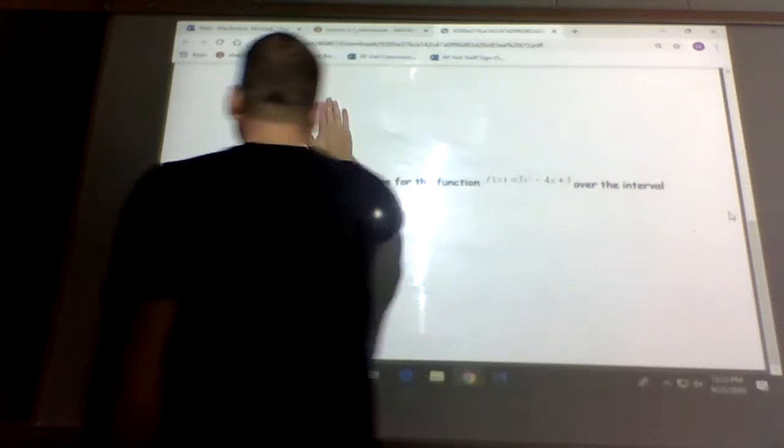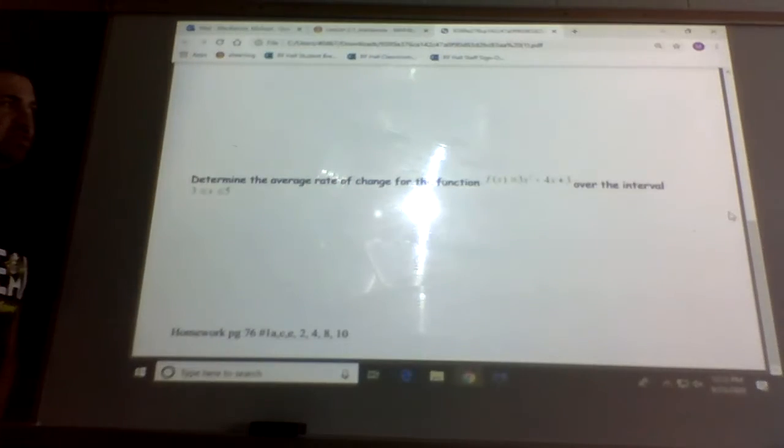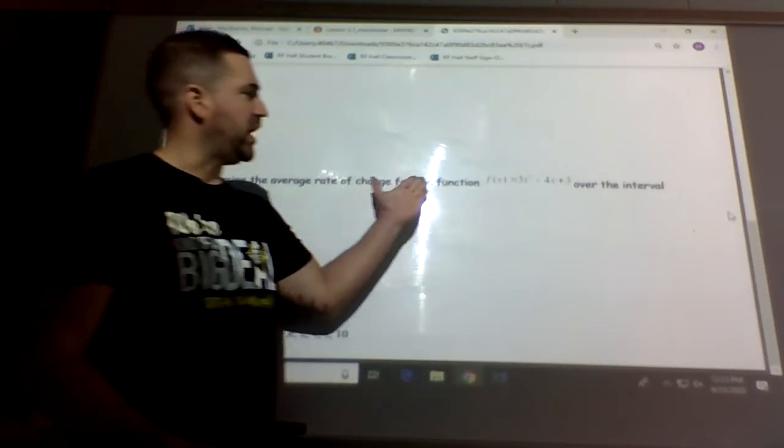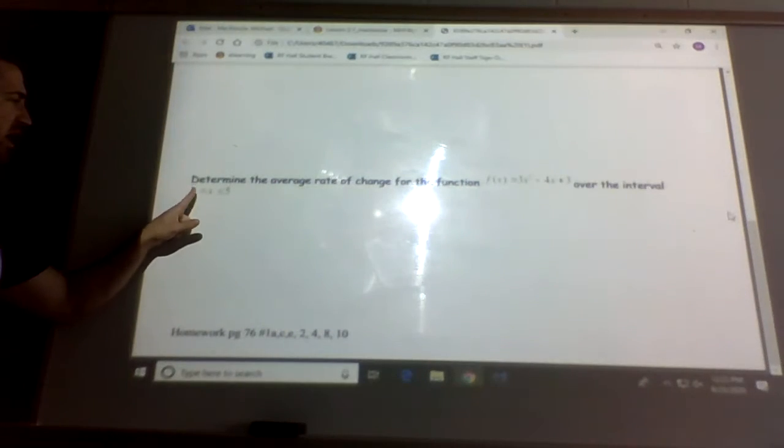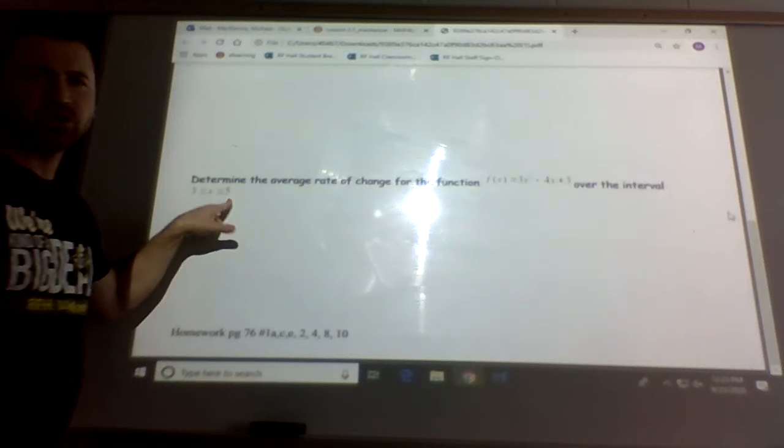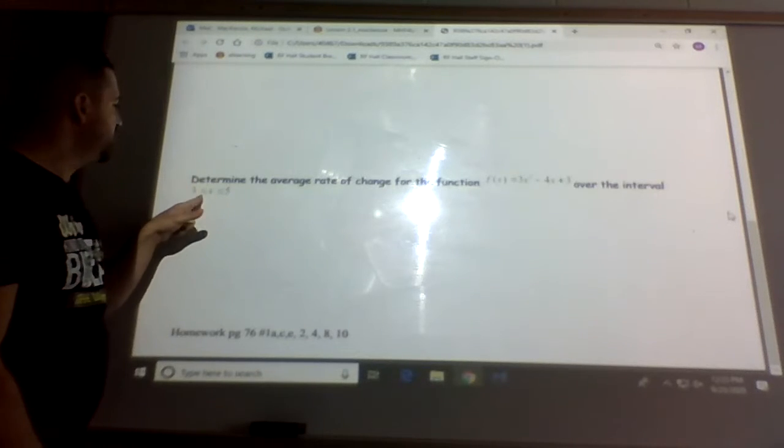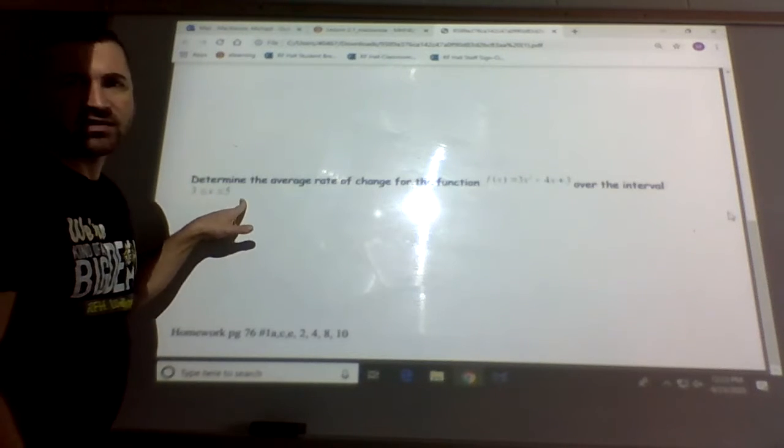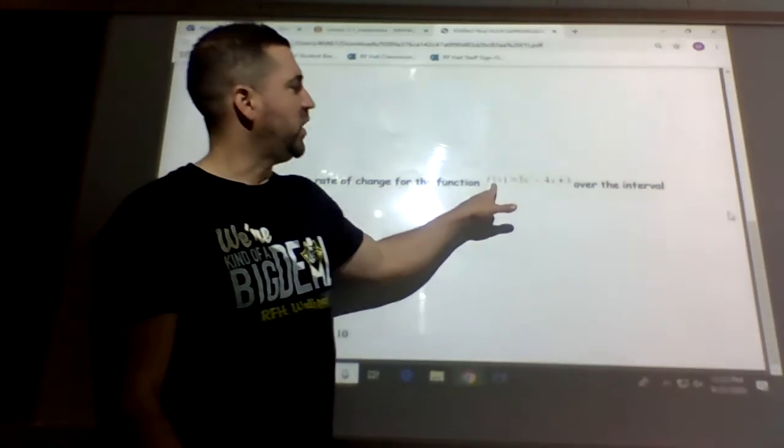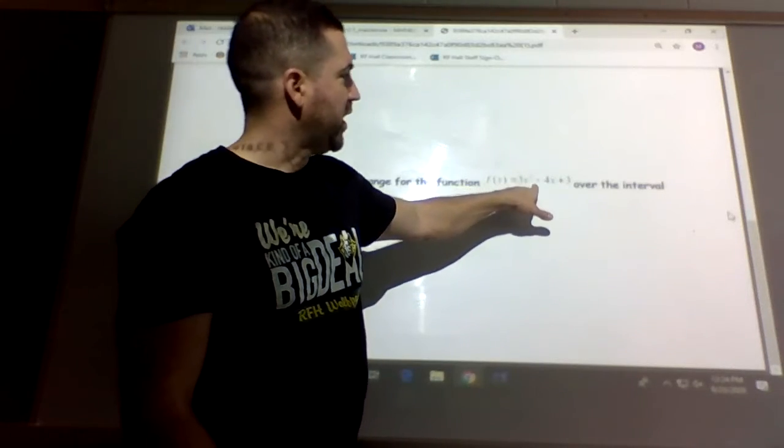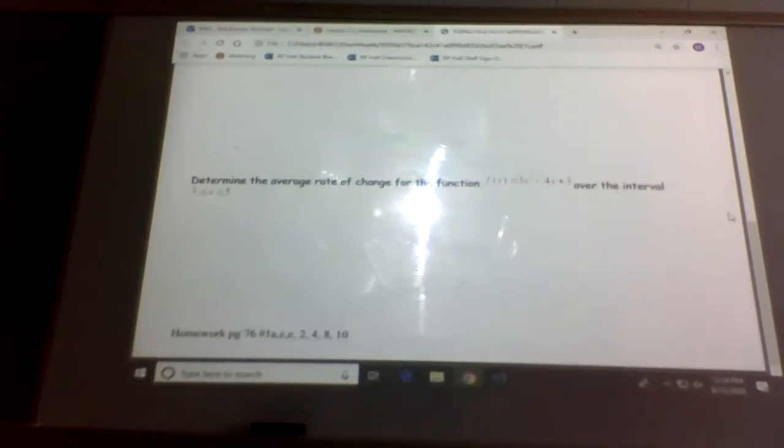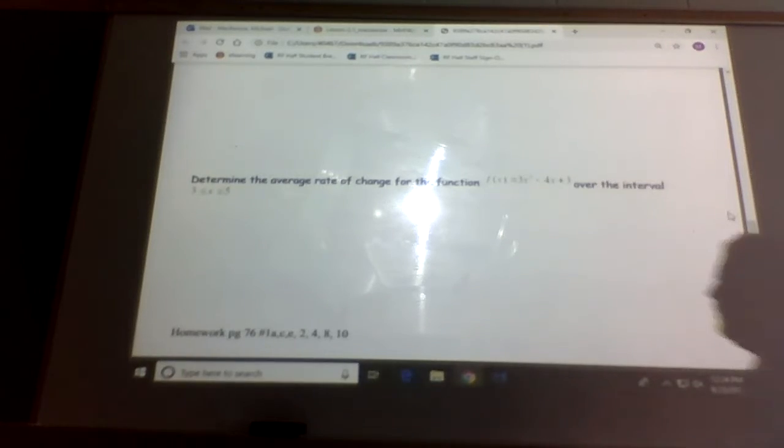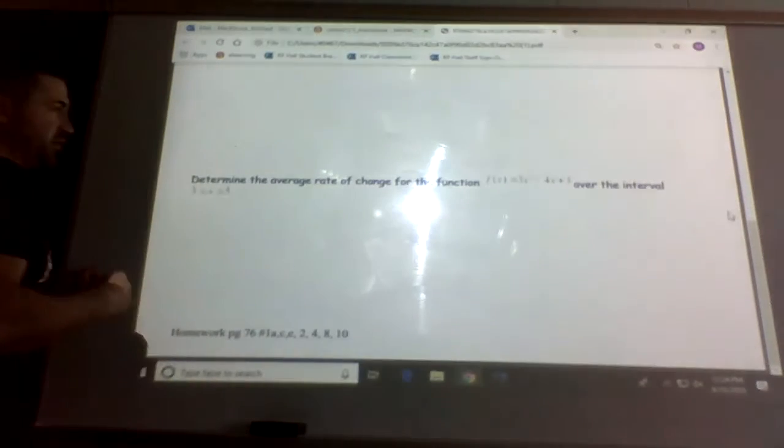Now our last one. Determine the average rate of change for the function. So they give you an equation this time instead of a table of values, over the interval between 3 and 5. So on your sheet you should be able to see this. So it's from greater than or equal to 3 but less than or equal to 5. And the equation here is f of x equals 3x squared, I can't read that. I think it's minus 4x plus 3.